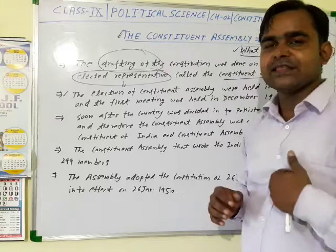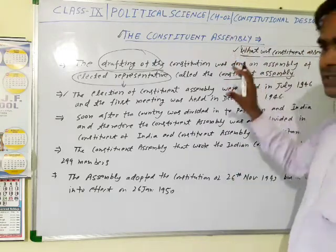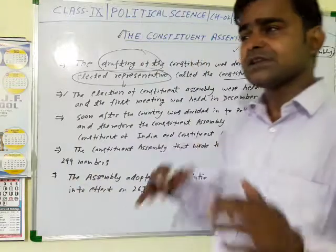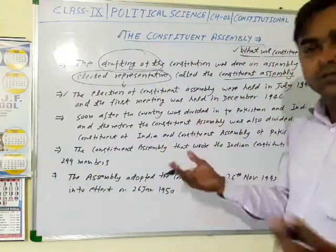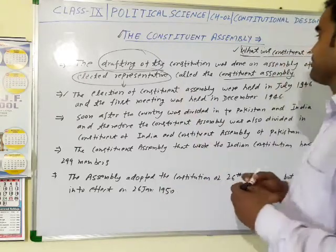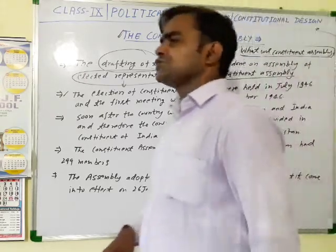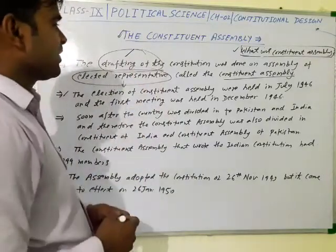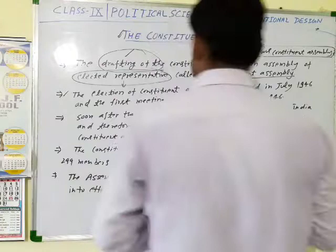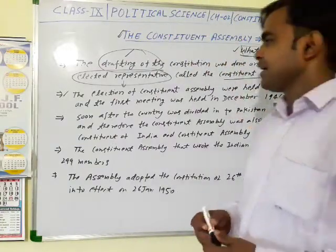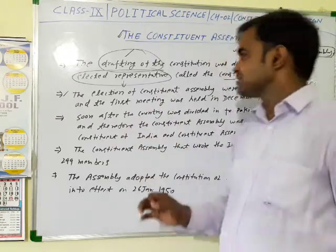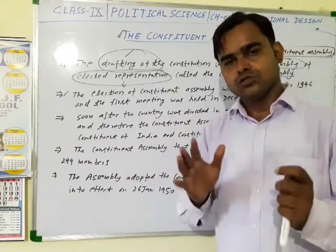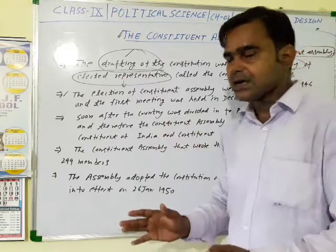Today we will discuss about the Constituent Assembly. An important question regarding this topic is: what was the Constituent Assembly? The drafting of the Constitution was done by an assembly of elected representatives called the Constituent Assembly. We have seen some great members who had an important role in the Constituent Assembly.